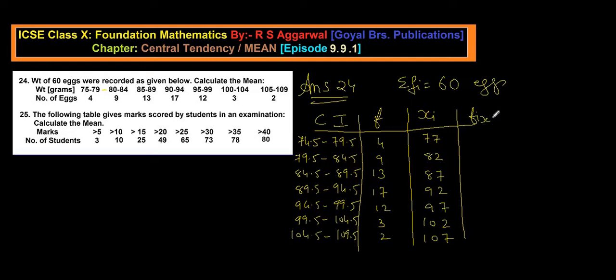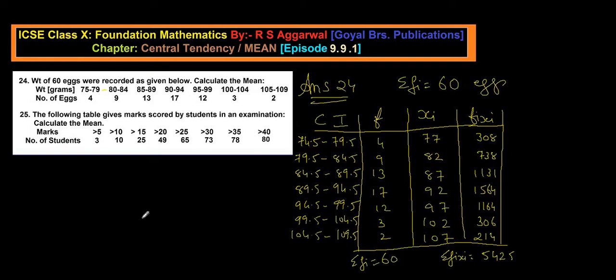Now what we require? We require to have fi xi. I can use any method over here but I find this one is easiest. 77 multiplied by 4, 308. I have already multiplied and just have written on the paper, so I am just writing direct value 738, 1131, 1564, 1164, then 306, and 214. Now if you add this one, sigma fi xi you get 5425, while frequency sigma fi is already given as 60. Then we place this one in a formula, sigma fi xi upon sigma fi is equal to 5425 upon 60. That comes up to what? 90.42 grams.